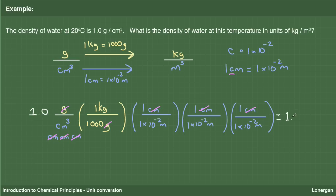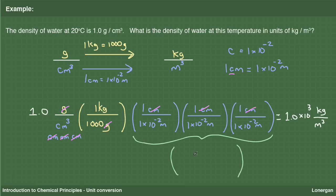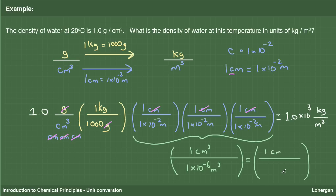Multiplying this out yields a final answer of 1 times 10 to the third kilograms per meter cubed. Note that I expressed the answer in scientific notation so that I can explicitly indicate the two significant figures on the density we started with. Just as any number of conversion factors can be combined, the successive multiplication of the centimeter to meters conversion factor can be combined into a single conversion factor: 1 centimeter cubed per 1 times 10 to the minus 6 meters cubed. This is just the cube of the single conversion factor, which should make sense because we are converting a unit raised to the power 3.